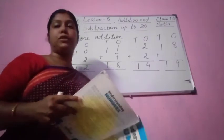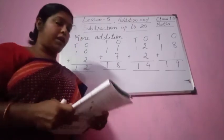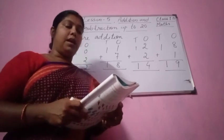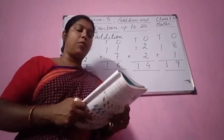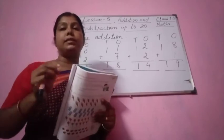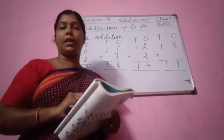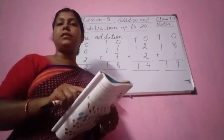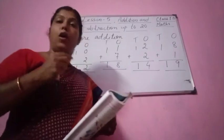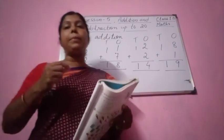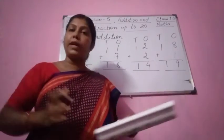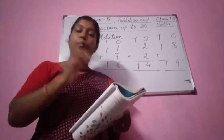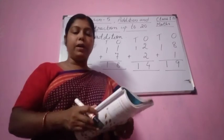Now we are going to do number stories. Shreya has 14 pencils. Her brother has 4 pencils. How many pencils in all? Number of pencils: Shreya has 14, her brother has 4. How many pencils in all — together? All means together. So 14 plus 4 is 18. All together both of them have 18 pencils.